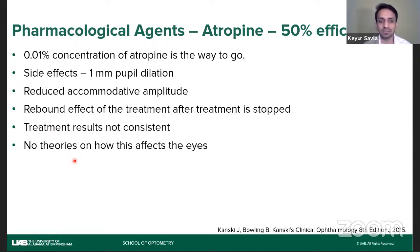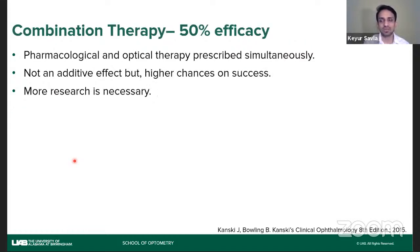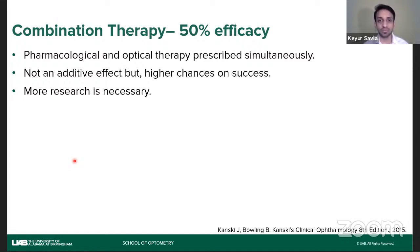Atropine alone is not the best line of treatment that clinicians across the world are considering, but at the same time it is helpful as it has 50% efficacy and patients can just wear their normal glasses or contact lenses alongside. Treatment results are not consistent — not every patient will be affected the same way, and there are no confirmed theories as to what is actually changing when atropine is put in the eye for a long-term duration. Combination therapy — that is, pharmacological treatment like atropine plus contact lenses or spectacles — has shown higher chances of success, especially for patients who are not doing well on other therapies alone. More research is necessary, but definitely higher chances of success if only one method does not work.